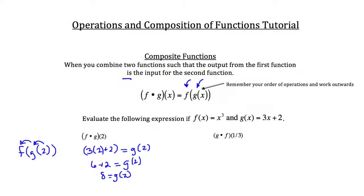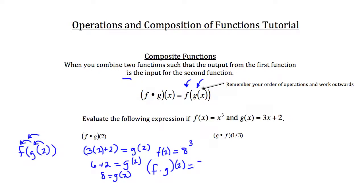Now that we know g of 2, we want to plug it into f. f of 8 is 8 cubed, so f of g of 2 equals 512.